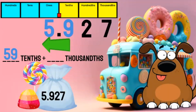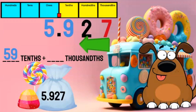Now I need to see how many thousandths remain. I look at the digit in the thousandths place and the digits to the left that I haven't used yet. I can see there are 27 thousandths remaining. If I place 59 tenths plus 27 thousandths into the bag, it will fulfill the order for 5 and 927 thousandths of a pound of lollipops and gumdrops.